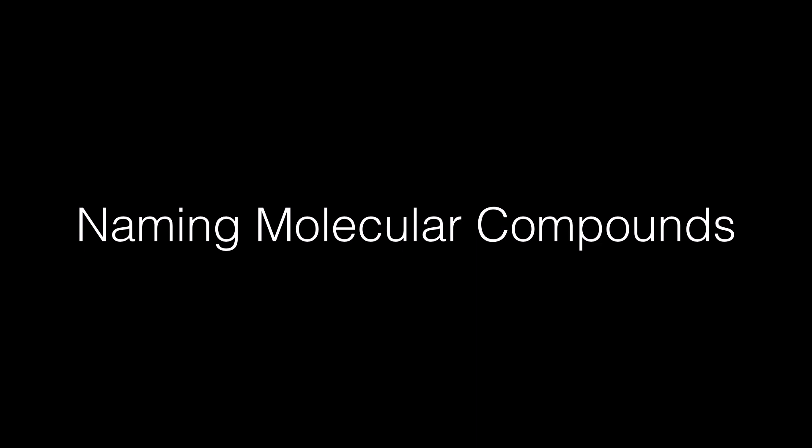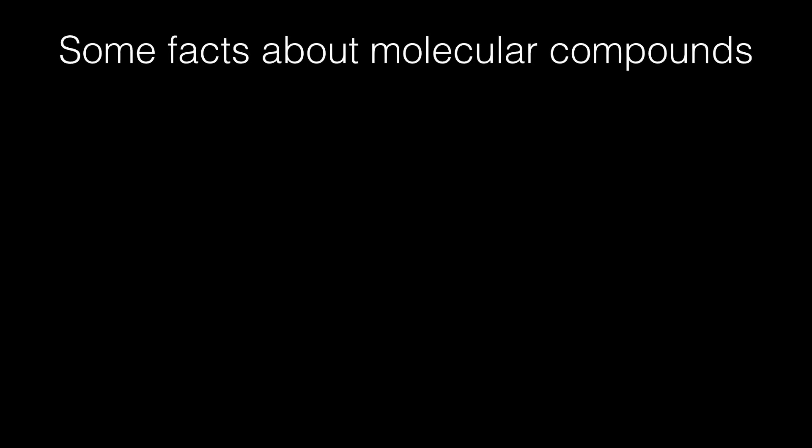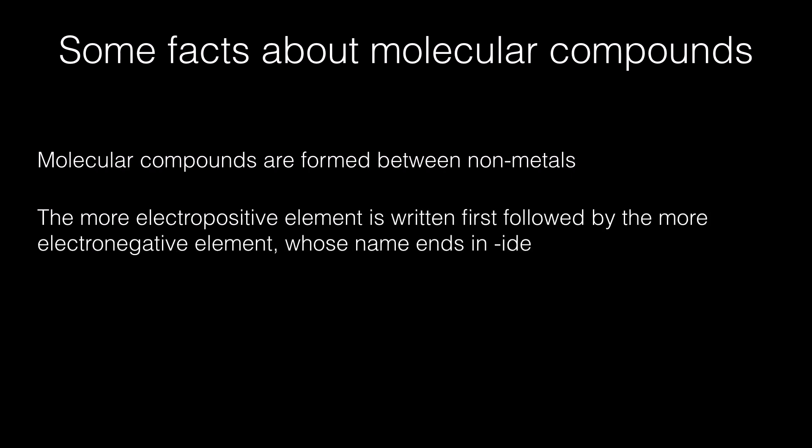Some facts about molecular compounds: Molecular compounds are formed between non-metals. The more electropositive element is written first, followed by the more electronegative element, whose name ends in -ide. Electronegative elements are those found on the right side of the periodic table. Metals are considered electropositive elements and non-metals are considered electronegative elements. The difference in electronegativity determines which element is written first.